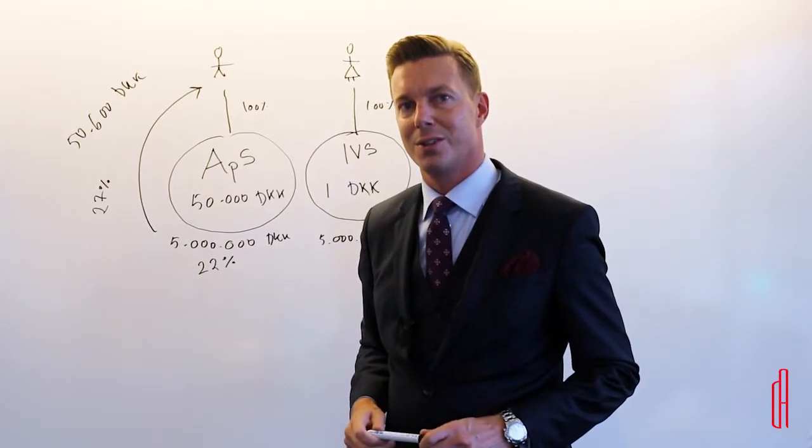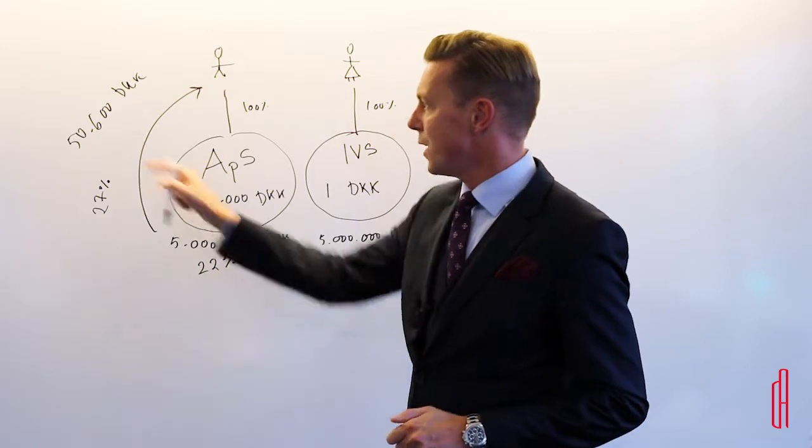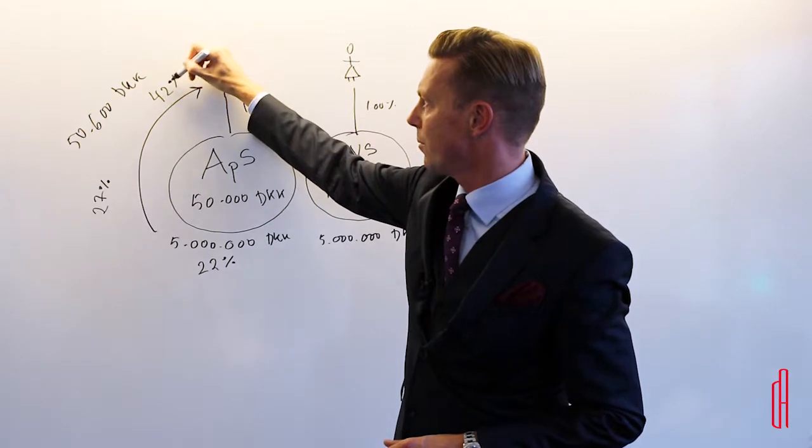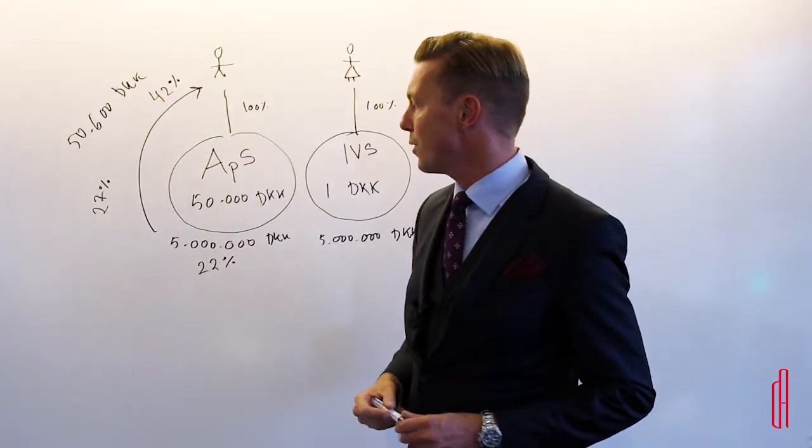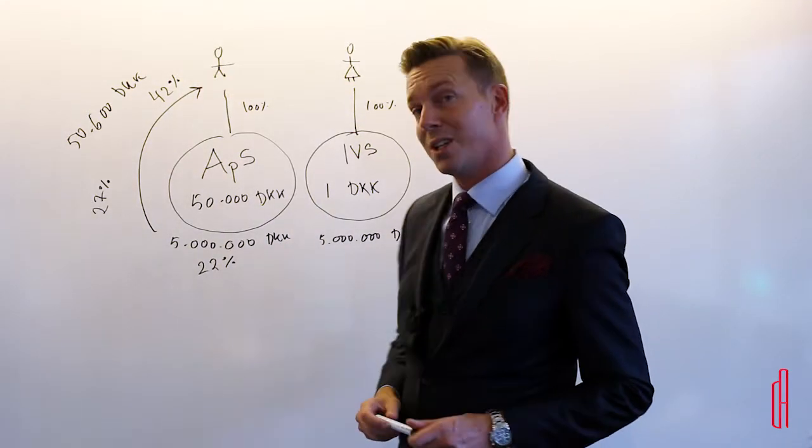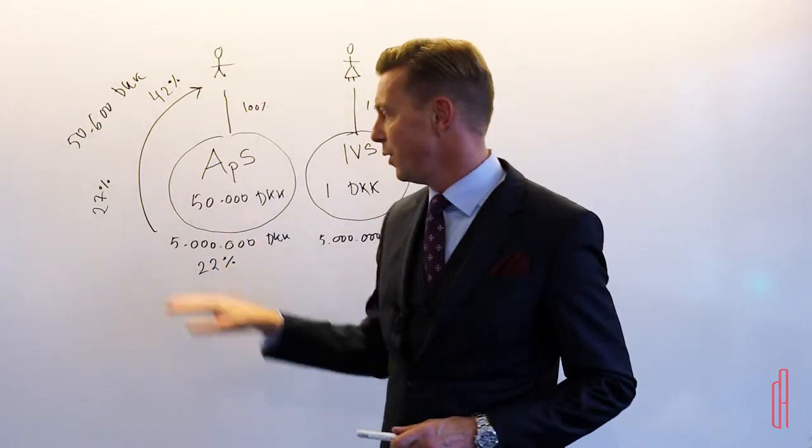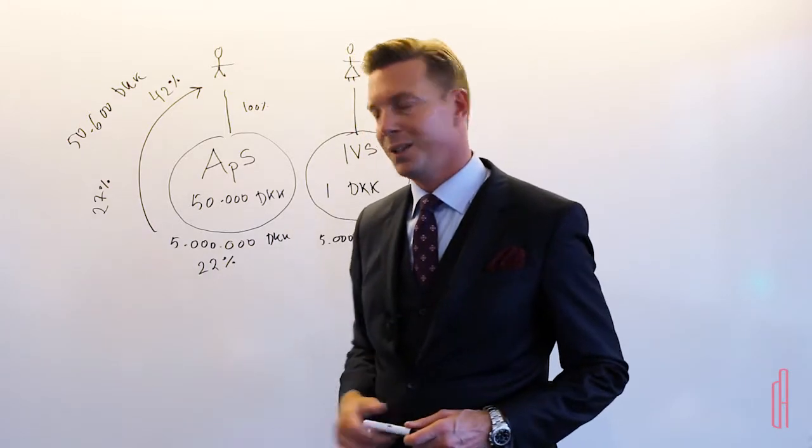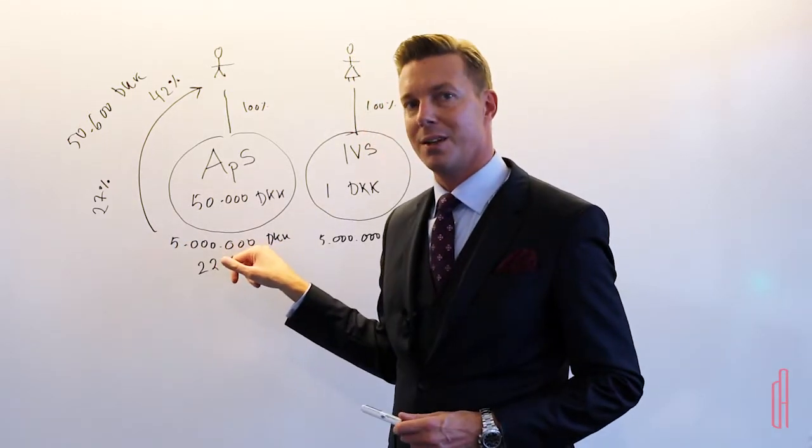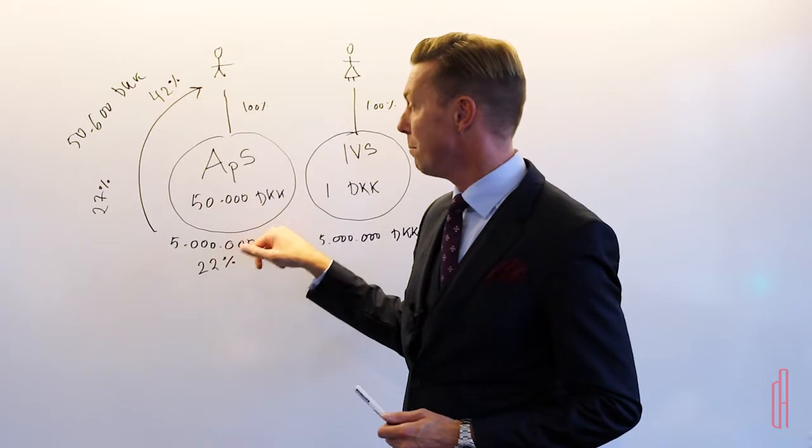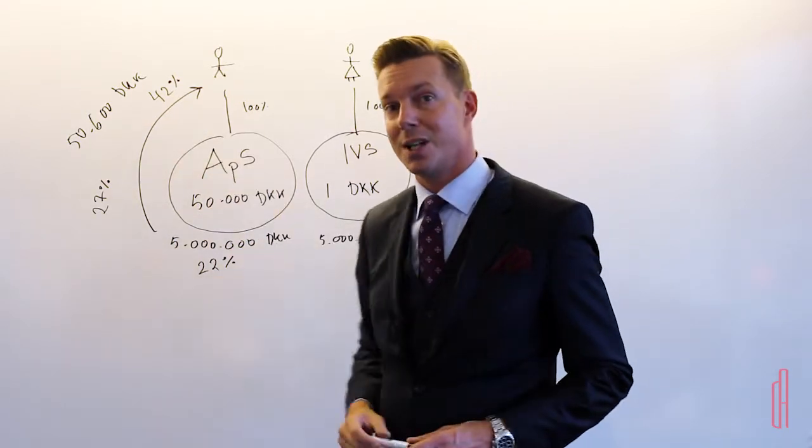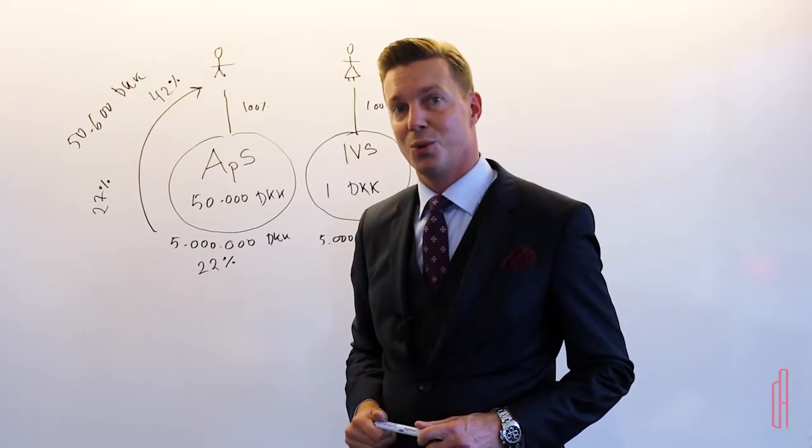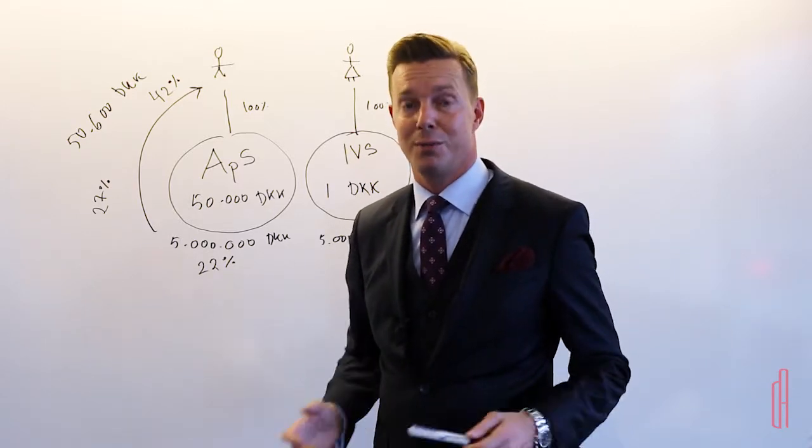If he takes more than 50,600, the tax increases to 42%, and all of a sudden now the tax is actually up to 64%. So if he wants to secure these five million from suppliers and from lawsuits, well he will not end up having five million on the bank account. He will have five million minus 64% in tax. So that's a very big decrease in cash flow just to secure the money. I think most people will find that not very interesting.